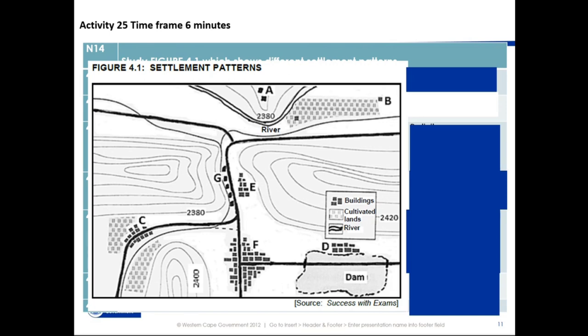This can be asked either in your theory paper or in your map section — they can ask you to identify the type of town. If you see there is an opening between two landforms, that opening is a gap. We refer to that in everyday life as a gap. So all we do is give it a name and we call it a gap town. It is a gap town — or you could also refer to it as a gateway town.